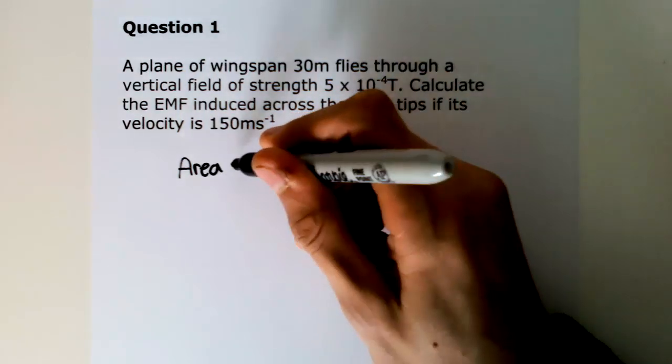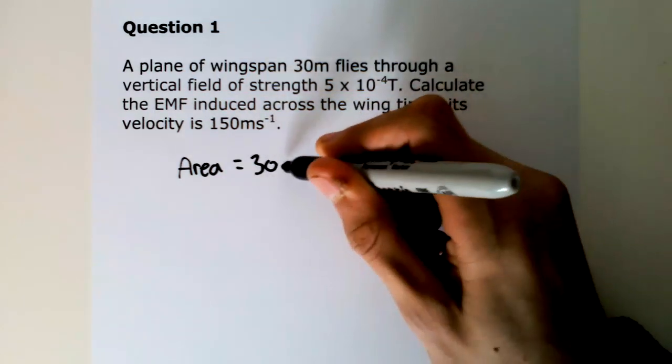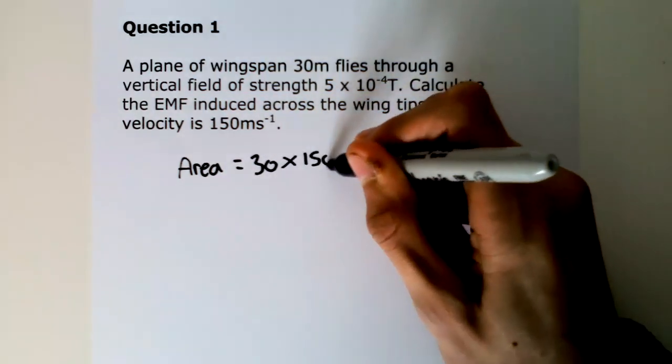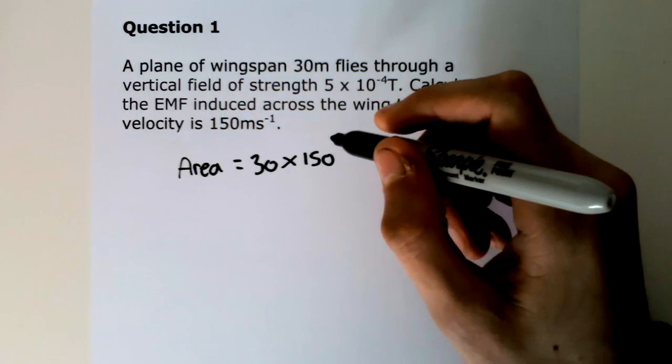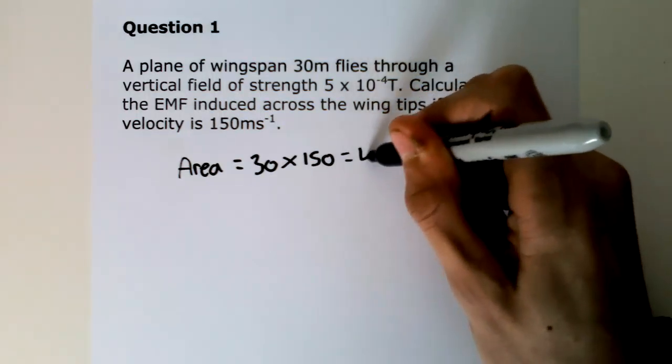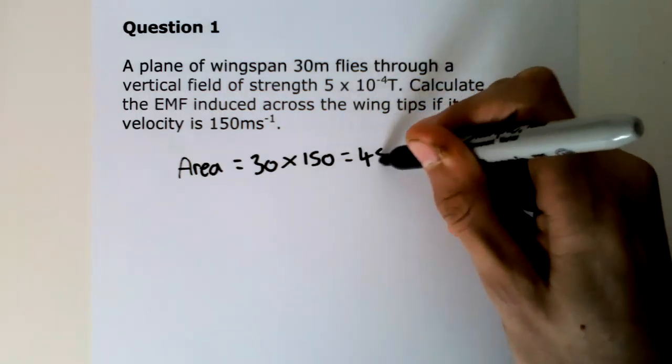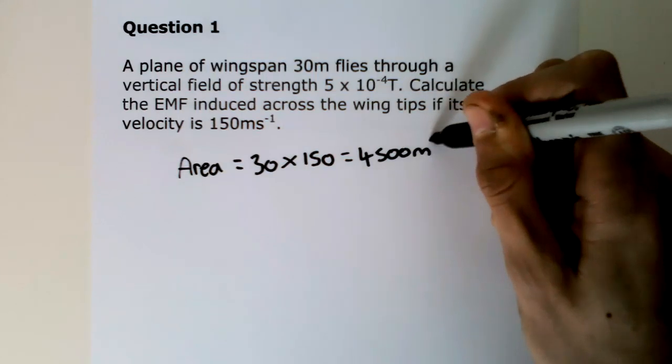So the area is equal to 30 times 150, and equals 4500 metres squared.